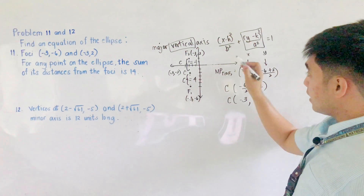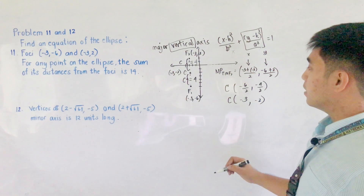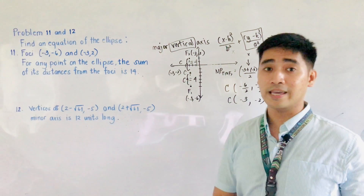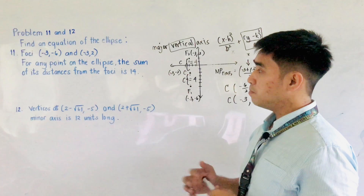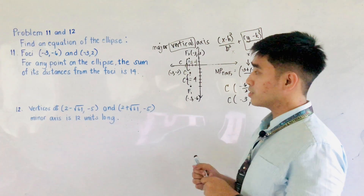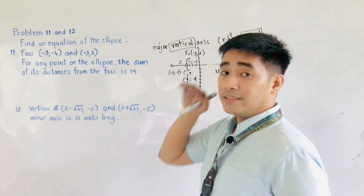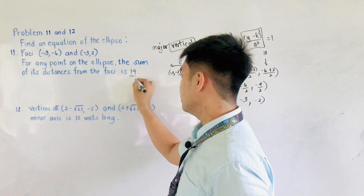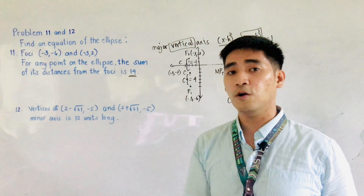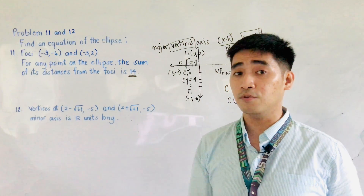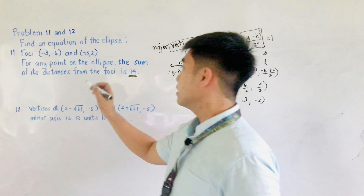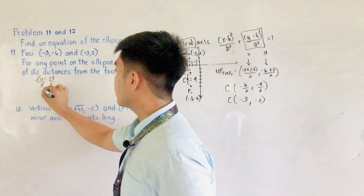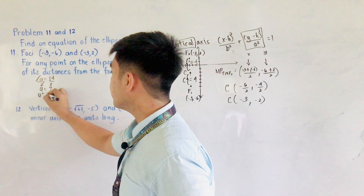Do we have the value of A? Not yet. Do we have the value of B? Not yet. But we have the value of C. From the second condition: for any point on the ellipse, the sum of its distances from the foci is 14. That constant is 2A based on the definition of an ellipse. Therefore, 2A equals 14, so A equals 7, and A squared equals 49.